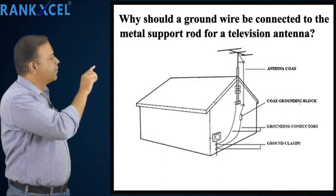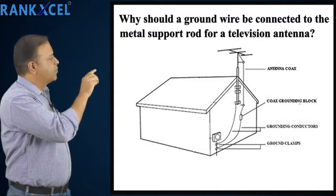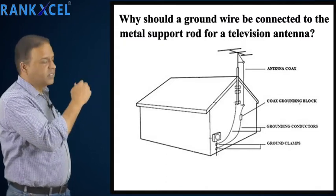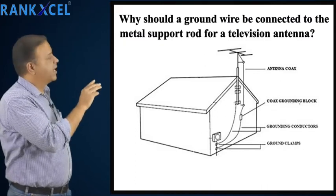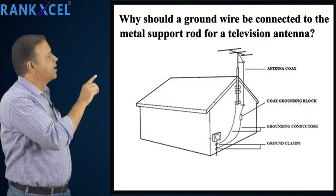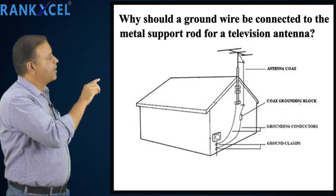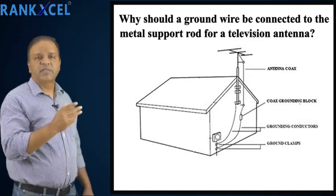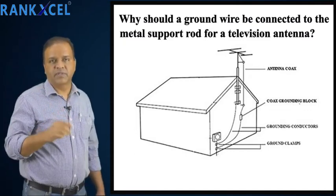The wire to the ground keeps the antenna, the television set, and even the air around the antenna at a close to zero potential. So now you understand — the television antenna has to be grounded to avoid further damage to the television.